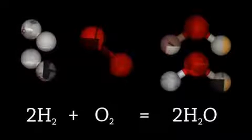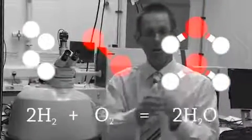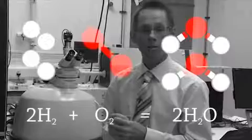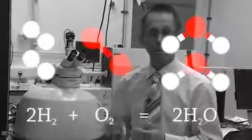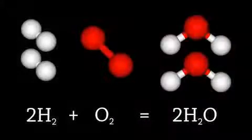But if we do that experiment in the lab and weigh the hydrogen, the oxygen and the water, we won't find that the masses are in the ratio 2 to 1 to 2. So that's why we use the quantity amount of substance for which the unit is the mole.